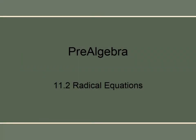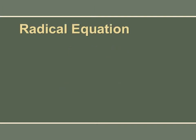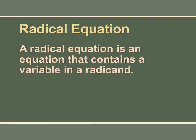We're going to discuss radical equations. A radical equation is where you have an equation — which means it has to have an equal sign — and then it's going to have a radical, which is the little square root symbol that we use. Inside your radical, you have to have a variable. A radical equation is an equation that contains a variable in a radicand, which is the inside of the radical.